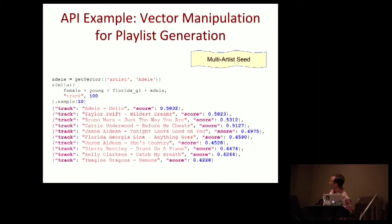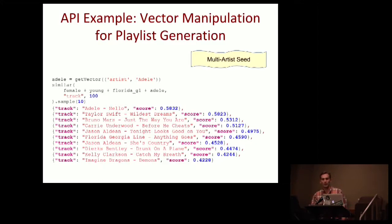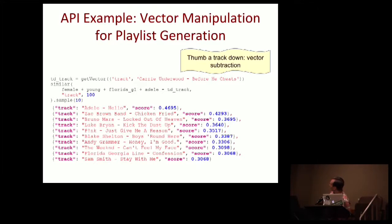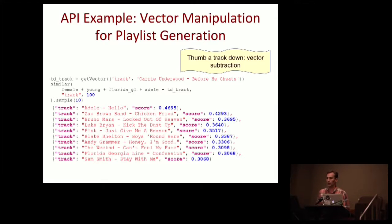Now say that young female country listener also starts an Adele station. Our top recommendations begin to pull in more recent female pop artists alongside the country we've already identified. Then if she thumbs down a Carrie Underwood song, the candidate list changes again — female country artists are no longer in the top ten picks. We still have country and female pop, but female country specifically drops out. With just three pieces of explicit information, we've already created a deep level of personalization for a new user.